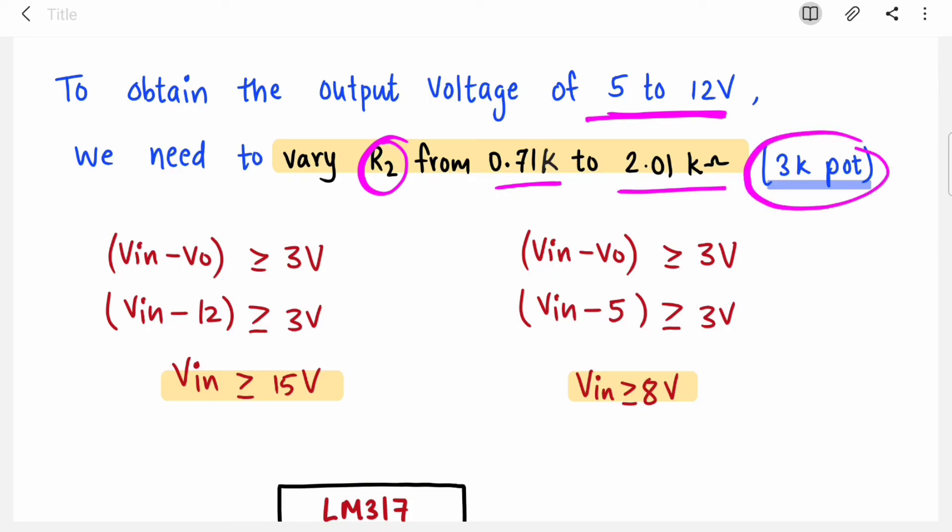What about the input side? The difference between output and input should be greater than or equal to 3 volts. If you are expecting 12 volts at output, you must give 15 volts at input. Similarly, if you expect 5 volts at output, your input voltage should be 8 volts.